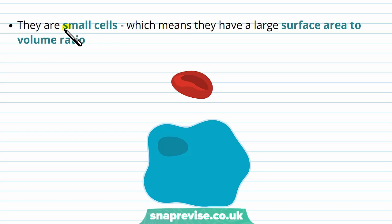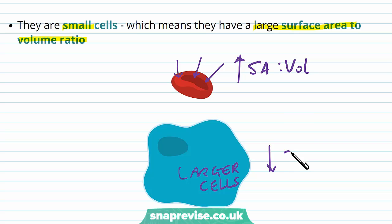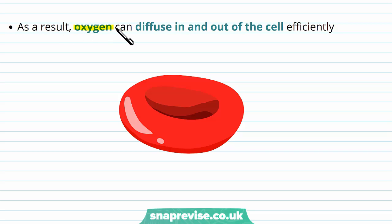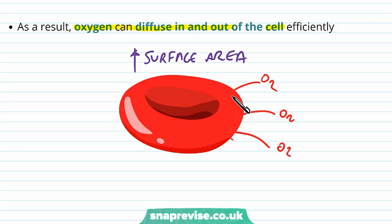Red blood cells are quite small compared to other types of cells, and therefore they have a large surface area to volume ratio. The smaller things in life tend to have a higher surface area to volume ratio, and this is good because it means more oxygen can get absorbed into the cell. As cells get larger, their surface area to volume ratio goes down. Because there's a high surface area, oxygen diffuses in and out very efficiently, maximizing the speed of transport and delivery of oxygen.